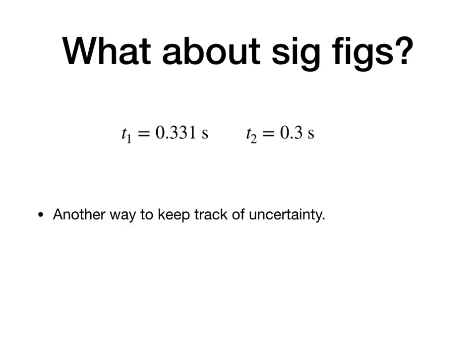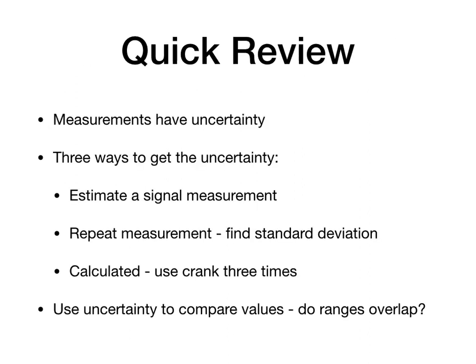This was a question a student asked. I said, well, what about significant figures? Here are two times with different significant figures. The significant figures is another method to keep track of the uncertainty in a situation. So, if you have 0.331 seconds, that's a more precise number than just 0.3. And so, then there are rules for how you deal with calculating quantities with uncertainty. In the end, I just, I don't like it. So, I like the uncertainty way better. So, don't worry about the significant figures.